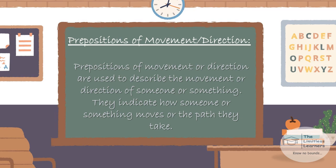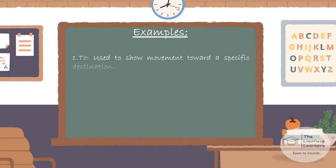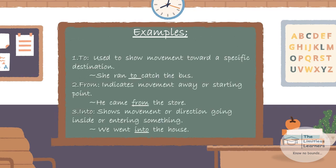Prepositions of movement or direction are used to describe the movement or direction of someone or something — whether a human or an object. They indicate how someone or something moves or the path they take. 'To' shows movement towards a specific destination — for instance: 'She ran to catch the bus.' 'From' indicates movement and a starting point — 'He came from the store.' 'Into' shows movement going inside or entering something — 'We went into the house.'